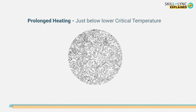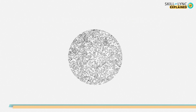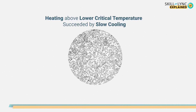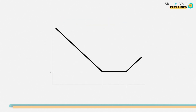Spheroidizing is done by prolonged heating of steel at a temperature just below its lower critical temperature, which is the minimum temperature required to obtain austenite. Another way is by heating and cooling the material alternatively between temperatures just above and below the lower critical temperature. Spheroidizing can also be done by heating the material above the lower critical temperature and then cooling it very slowly, either inside the furnace itself or by holding it at a temperature just below the lower critical temperature.